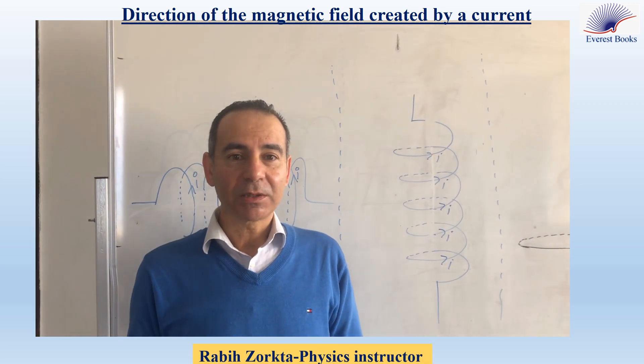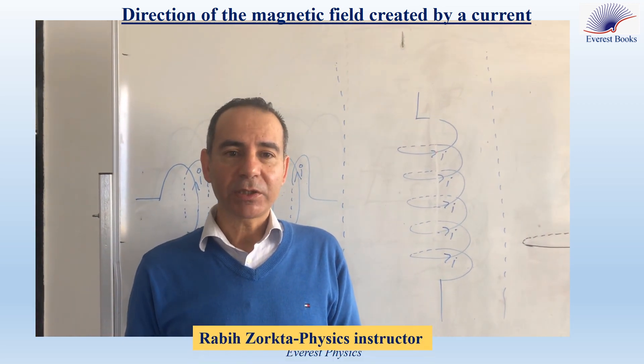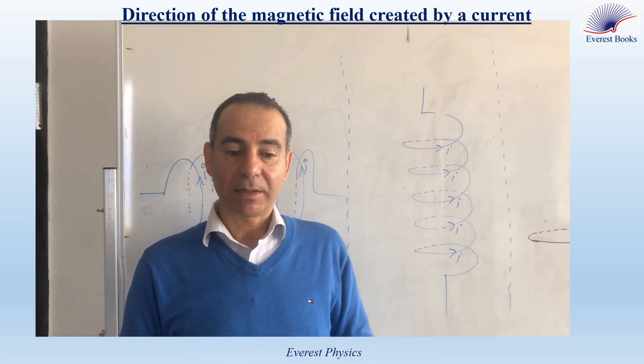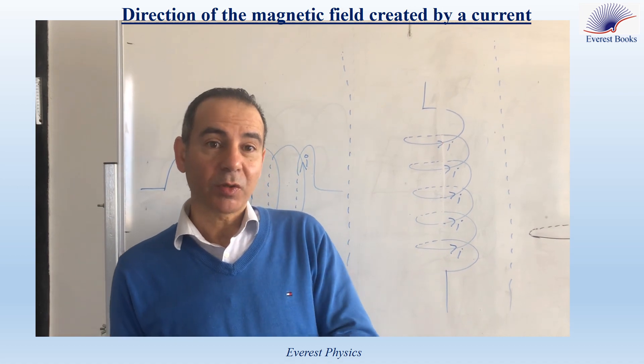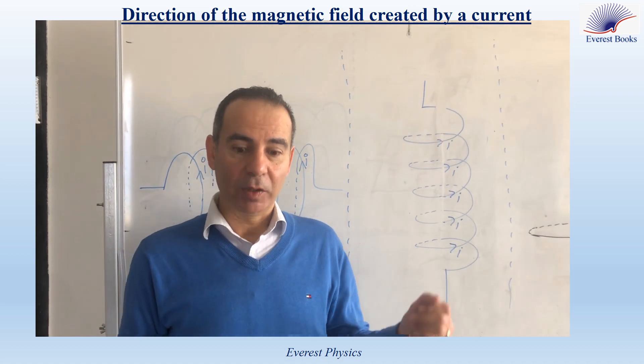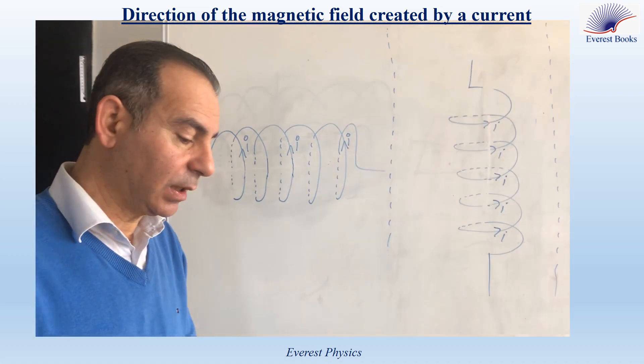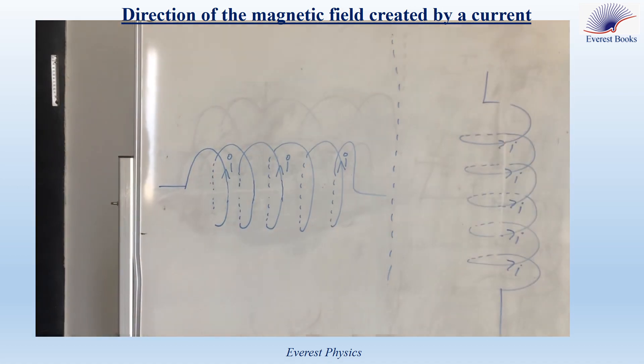This experiment is about the determination of the magnetic field created by a current inside a solenoid or at the center of a loop. Let's start with the solenoid.